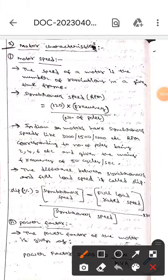Hello guys, how are you all? Fine. Today we are here to discuss motor characteristics. Here the first one is motor speed. The speed of the motor is the number of revolutions in a given time frame, whereas synchronous speed is calculated in RPM. Its formula is 120 times f by p, where f means frequency and p means number of poles.